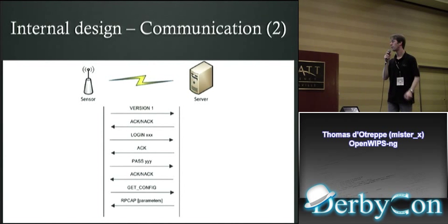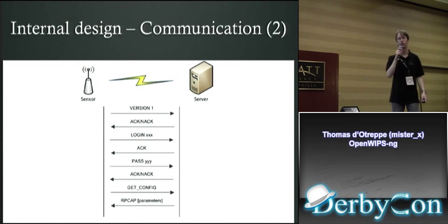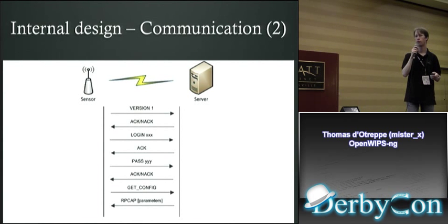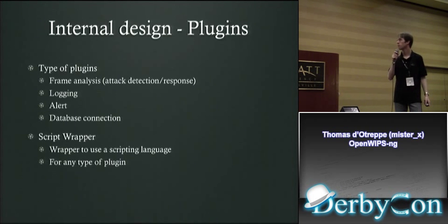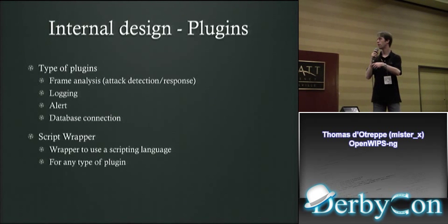Here's how the command flow works between sensor and server: first it sends the protocol version, and the server accepts it or falls back to a previous version until it finds one that works. Then it sends login and password to verify credentials, asks for configuration, and the server sends the remote packet capture configuration including the port to connect to. The plugins have a few different types, and the script wrapper lets you use scripting languages to quickly implement any of those four plugin types.